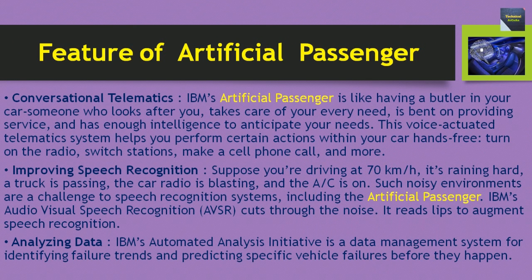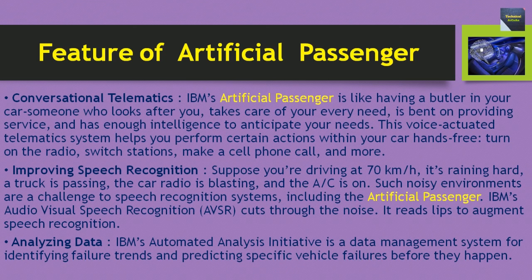Features of artificial passenger — conversational telematics: IBM's artificial passenger is like having a butler in your car, someone who looks after you, takes care of your every need, is bent on providing service and has enough intelligence to anticipate your needs. This voice-actuated telematics system helps you perform certain actions within your car hands-free: turn on the radio, switch stations, make a cell phone call and more.